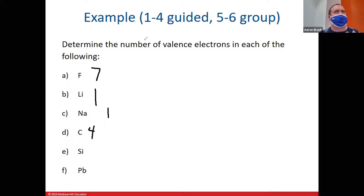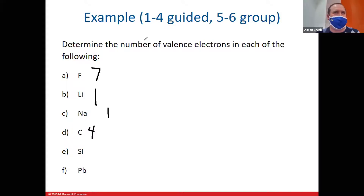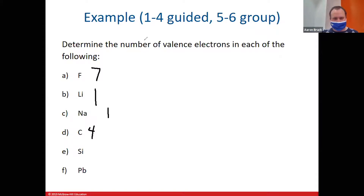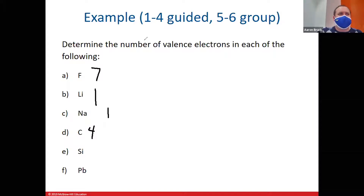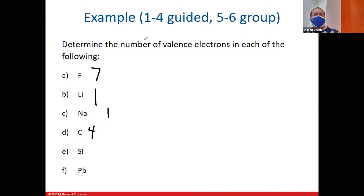Take a couple of minutes to figure out the number of valence electrons for silicon and for lead. If you don't have a periodic table, you can look at the one on the wall, or raise your hand and I'll bring you a paper copy.